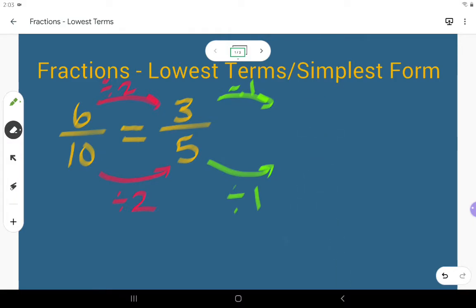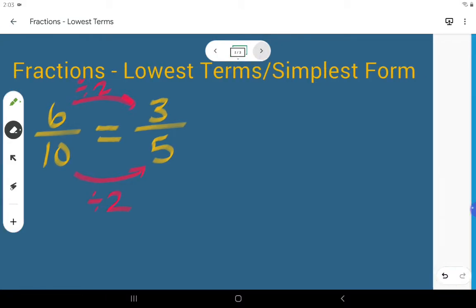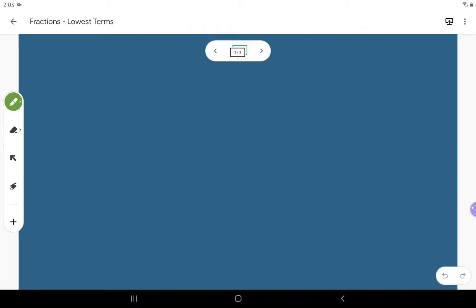Putting a fraction into simplest form really just means making sure we divide the numerator and denominator by the same thing so that the fraction becomes as small as possible. Let's do another one. We'll work with something maybe a little bit harder—let's say 27 over 30.